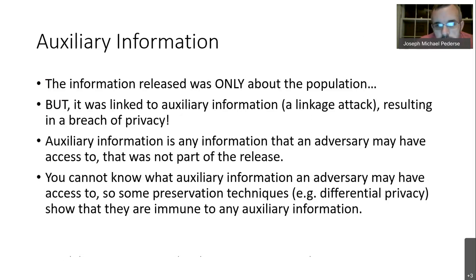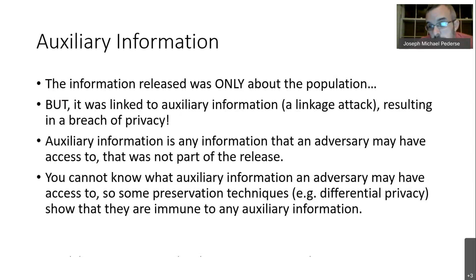The main culprit here is auxiliary information — any information that wasn't included as part of your information release. In this case the auxiliary information is linked to your release in what's called a linkage attack. In all the literature on privacy preservation, there's no limit on what auxiliary information an adversary may have. Some techniques, like differential privacy, actually prove they are immune to any auxiliary information, because you just can't know ahead of time what information an adversary may have access to.